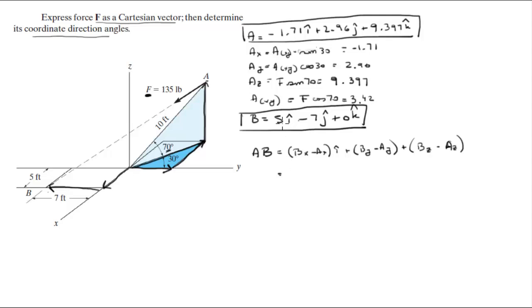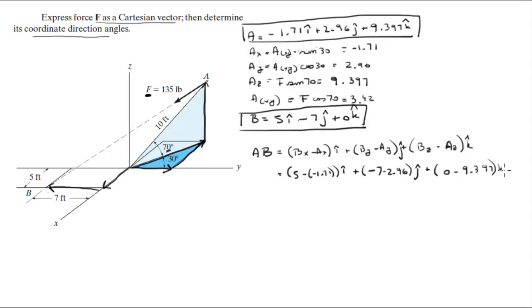This vector comes out to be 6.71i minus 9.96j minus 9.397k. This is the vector from A to B.